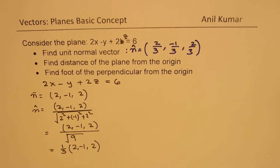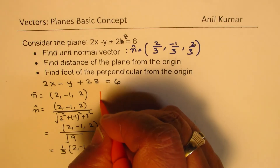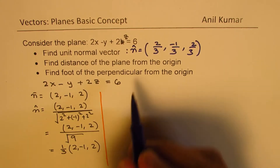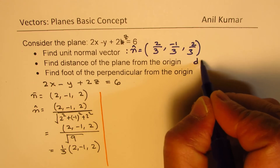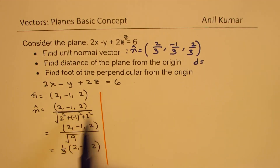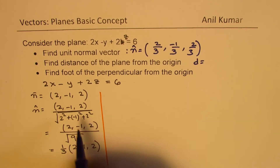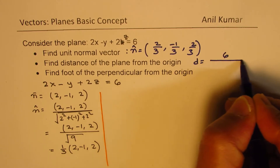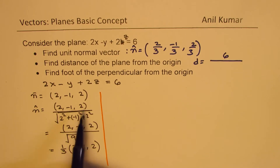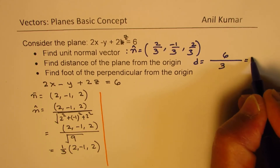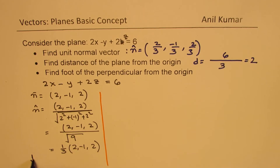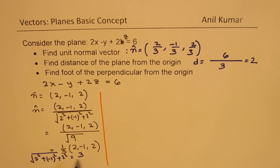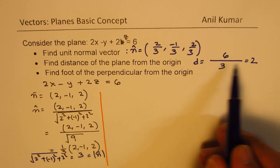Now let's find the distance of the plane from the origin. The distance equals D divided by the magnitude of the normal vector. Here D is 6 and the magnitude is 3, so the distance is 6 divided by 3, which gives us 2 units. We calculated that the square root of 2 squared plus (-1) squared plus 2 squared equals 3, which is the magnitude of the normal.